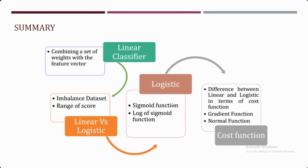Next, we moved to logistic regression. If we have probability, the interpretation of class labels becomes much better than strict classification. To achieve this, we need to squeeze the calculated score into a range. We use a link function — in logistic regression, this is the sigmoid function, also called the logistic function, which is why it's called logistic regression. The sigmoid function squeezes the calculated value into a range of zero to one.